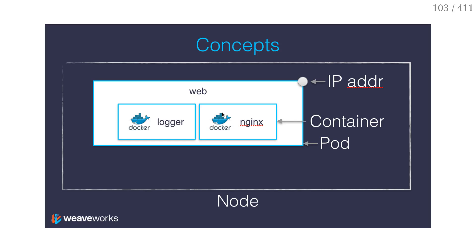Pods are scheduled on a single node, and the containers in a pod all have the same IP address. This can be a little bit mind-breaking, especially if you have a really traditional network background. In traditional networks, if you have two machines with the same IP address, that doesn't work — it kind of does, and then you have an IP address conflict, sometimes one machine works and then it's the other, and it can be pretty tricky to debug.